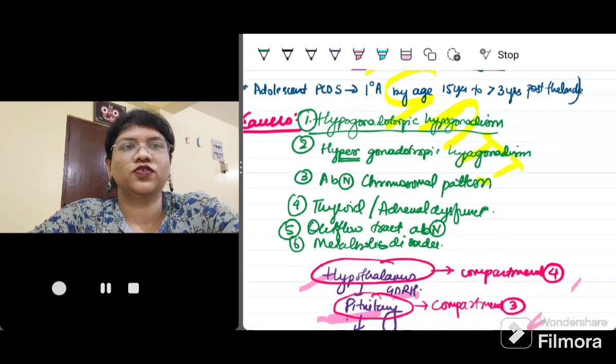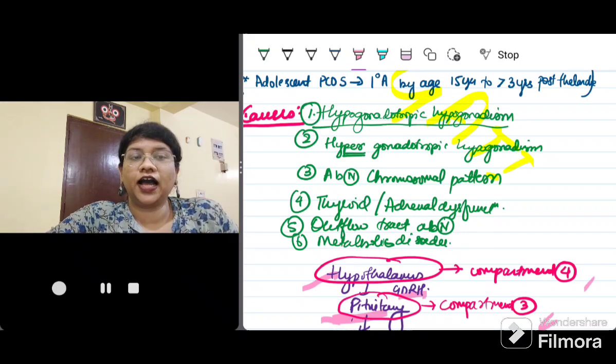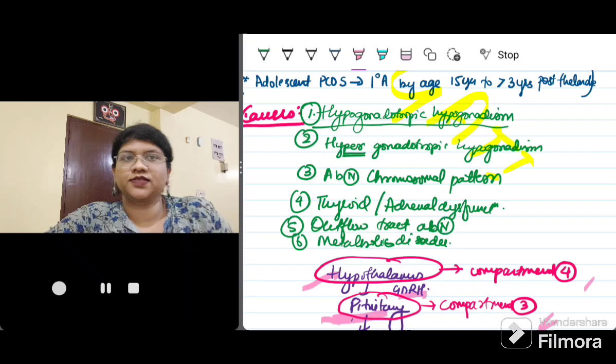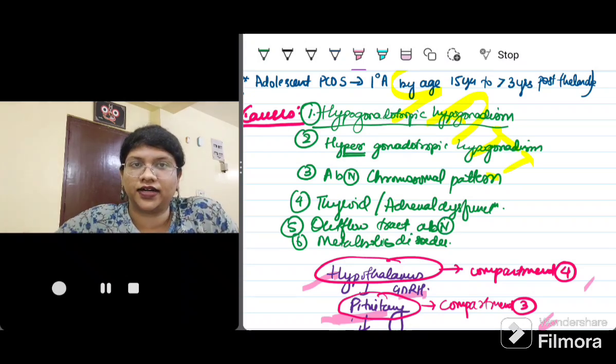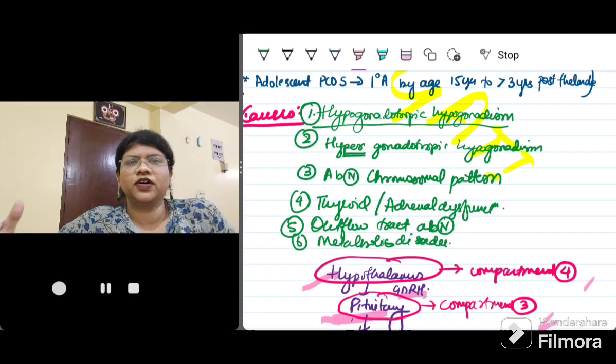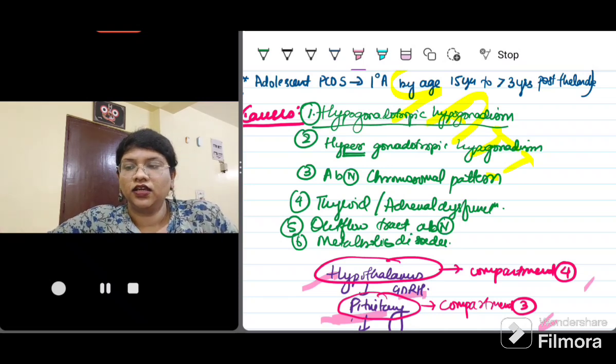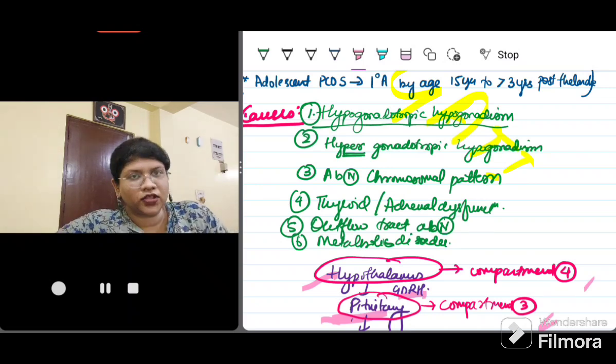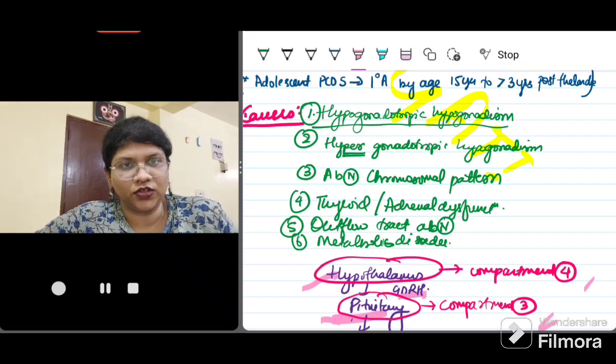Now, coming to the causes. First is hypogonadotropic hypogonadism. These we are dealing with the hypothalamus or the CNS problems. What can be the causes of hypogonadotropic hypogonadism? The first can be delayed puberty. Next, it can be because of any CNS tumors like prolactinoma, craniopharyngioma, Kallmann syndrome, or any hormone secreting pituitary tumor.